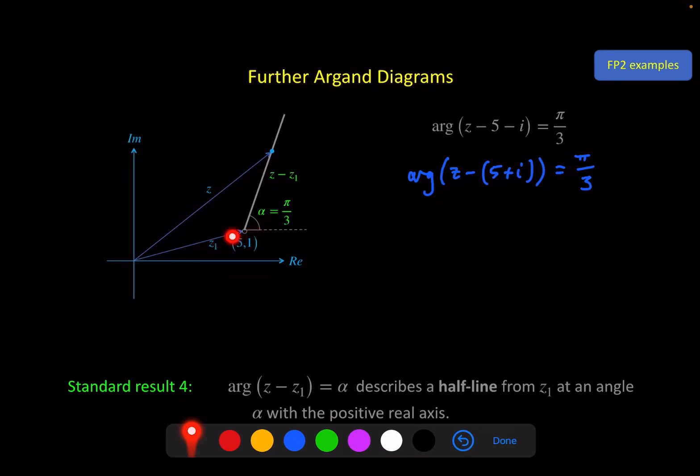you just need the open circle, a little horizontal dashed line so that you can put in the angle here, and the half line drawn up like that. Write in the angle itself to complete it, that's a key piece of information, and you could put on the coordinates of z1 as well.